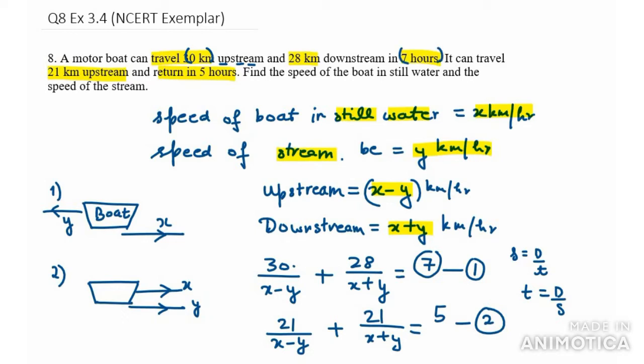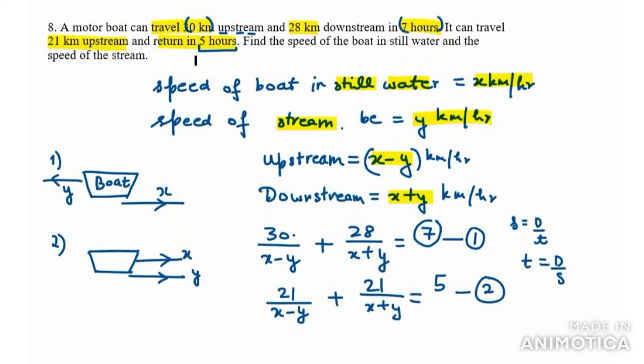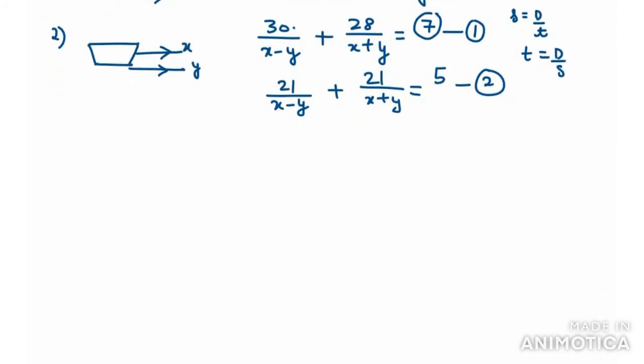The next condition is the same. 21 km upstream: 21 over x minus y, plus 21 over x plus y for downstream, equals 5 hours. Now we have 2 equations to find x and y values. First we'll reduce the equations to make them simpler.